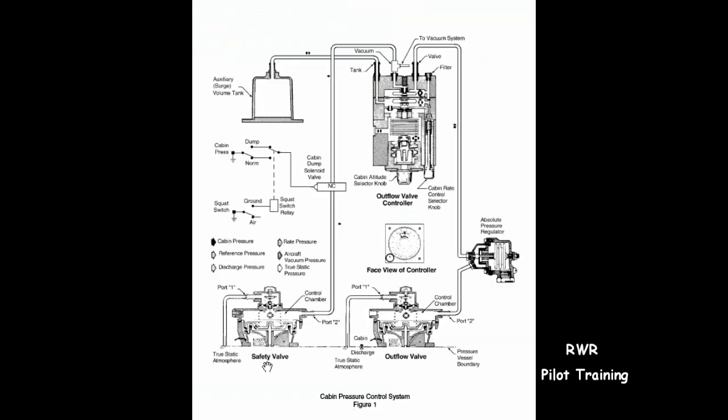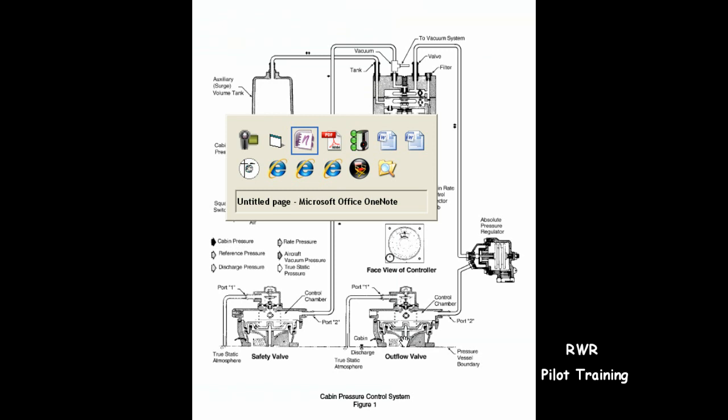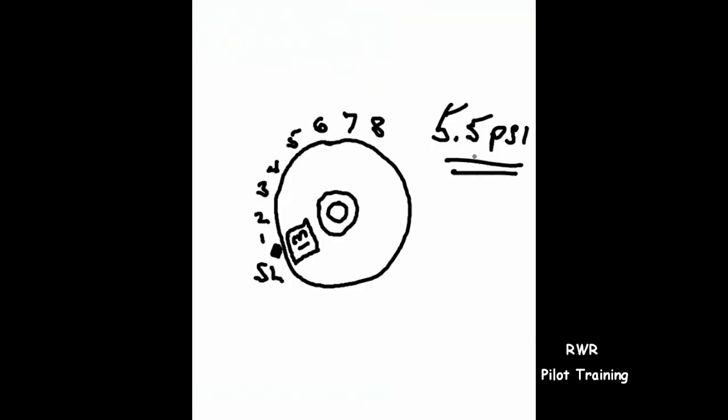That is there strictly to protect the outflow valve or to protect the cabin if the outflow valve fails to open at 5.5 PSI. At 5.5 PSI, the outflow valve opens and we maintain 5.5 PSI cabin until the aircraft descends back down below 13,000 feet.